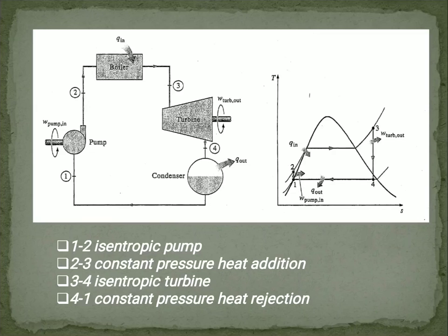Next is 2 to 3, which is a boiler. You can see 2 to 3 is a boiler. In a boiler, heat addition is taking place. So it's a constant pressure process. 2 to 3 is a constant pressure process. In a T-S diagram we can see 2 to 3 is a constant pressure process. Here heat addition is taking place. Basically heat is added here.